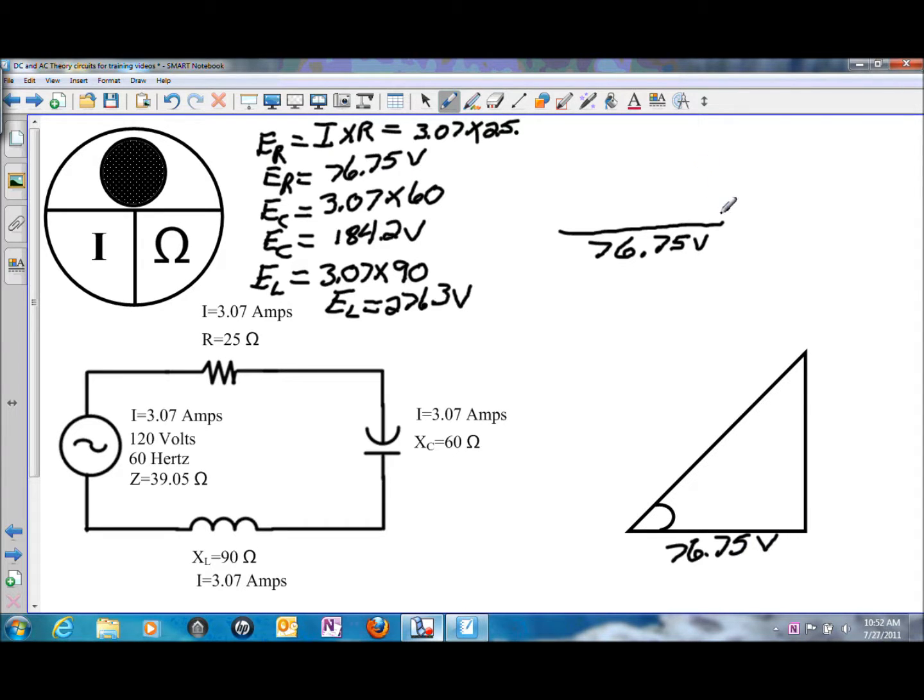We have an inductive voltage of 276.3 and a capacitive voltage of 184.2, which will result in a reactive voltage of 92.1 volts, and that is the difference between the inductive voltage and the capacitive voltage.